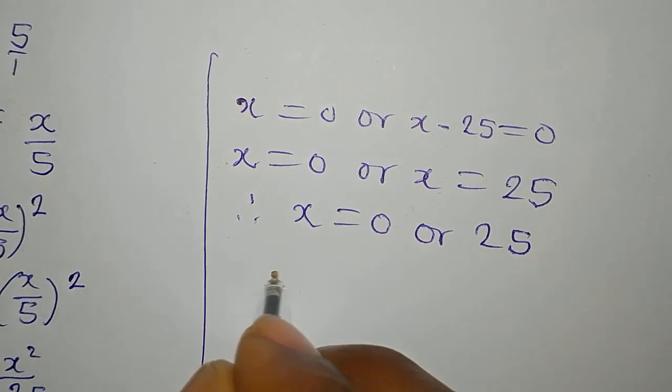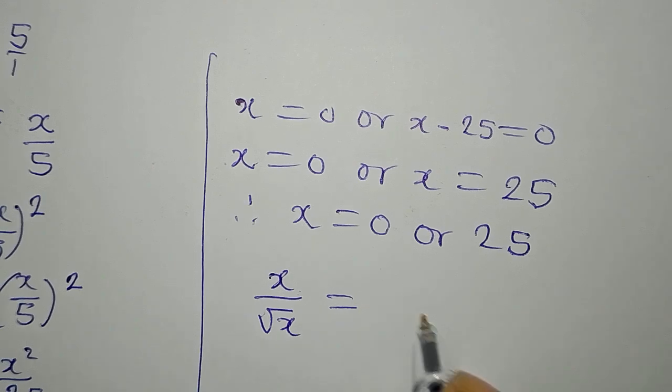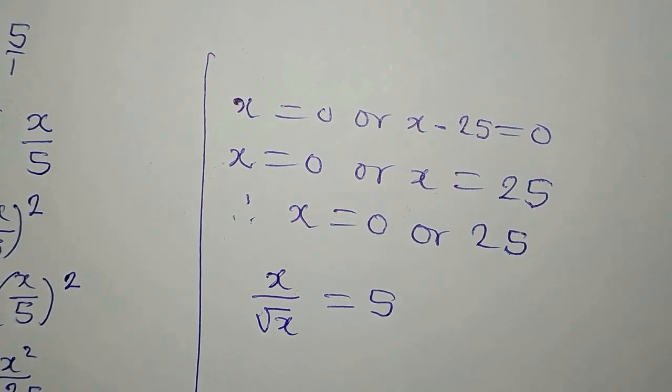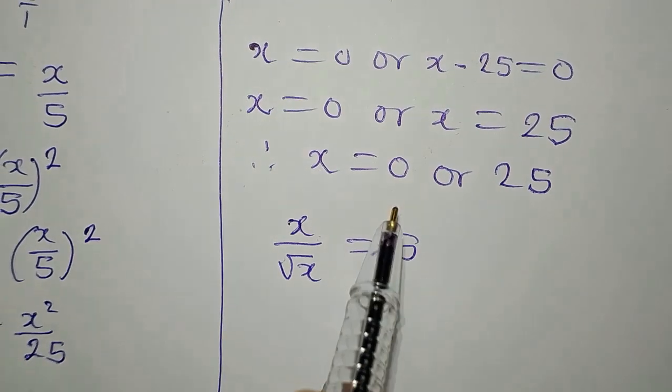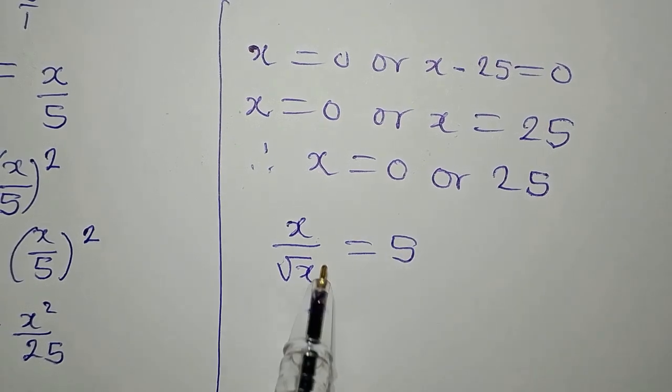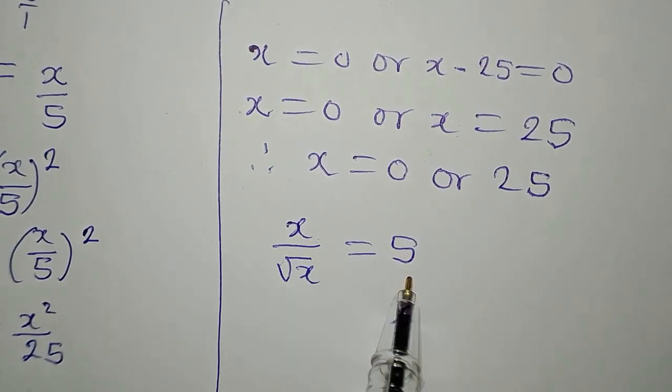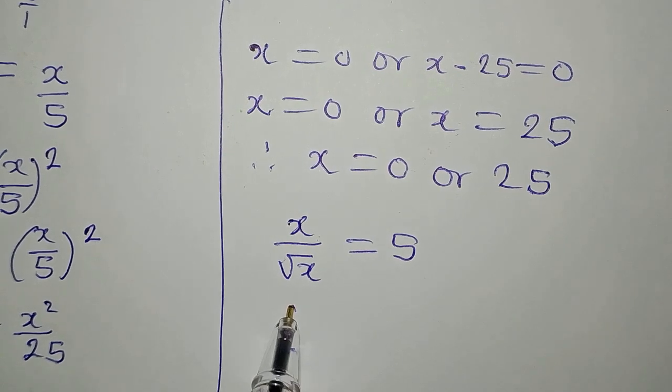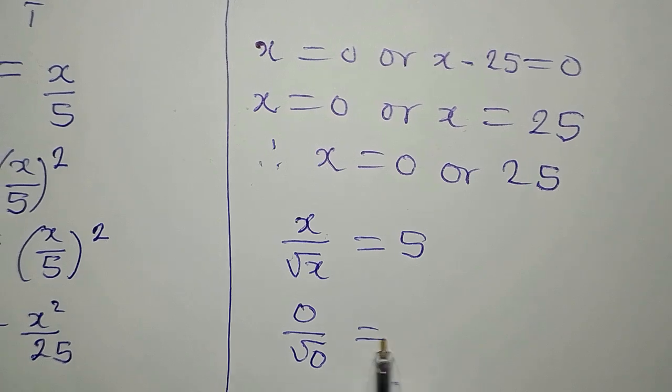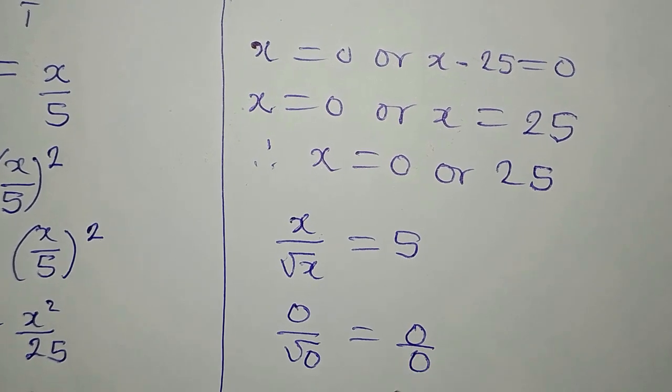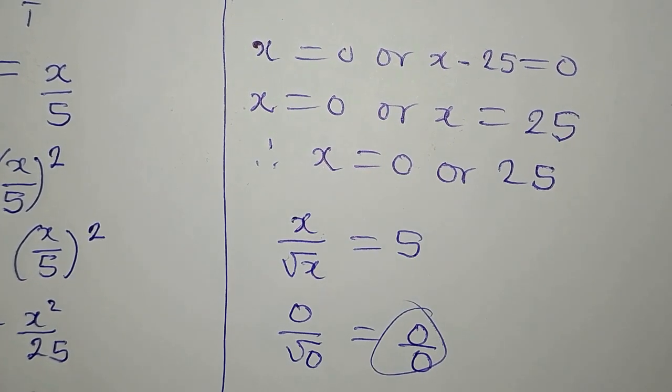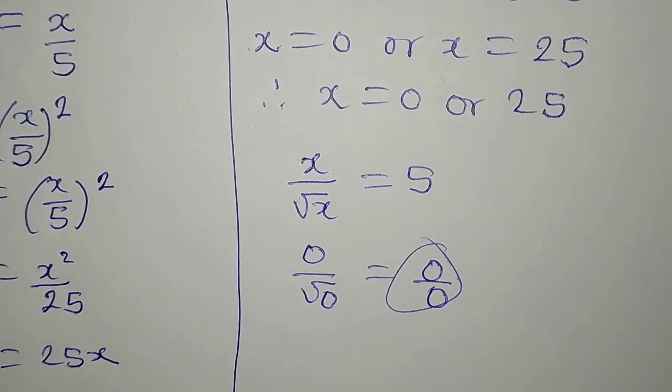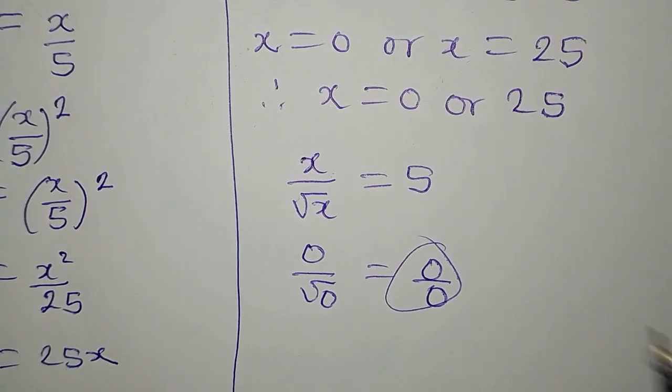We have x over square root of x equals 5. Now, if I put in the value of x as 0, it is never going to give us 5. Because at the end of the day, you will have 0 over square root of 0 and that is 0 over 0, which is undefined. It is not giving us the 5 on the right-hand side.